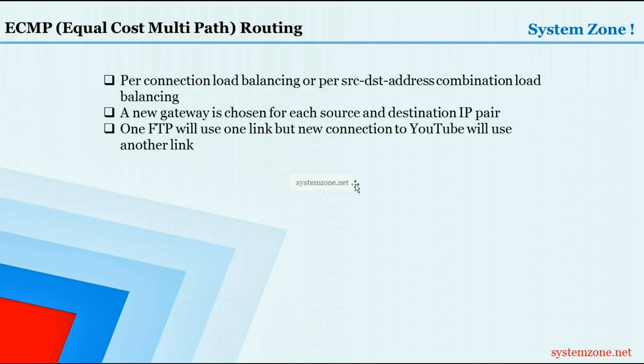ECMP is a per-connection load balancing, so in ECMP load balancing a new gateway is always used for each source and destination IP pair. For example, if you have a MikroTik router with two WAN connections and configure ECMP on it and make a connection to an FTP server, it will use one link, and if you make another connection to a YouTube server, it will use another link.